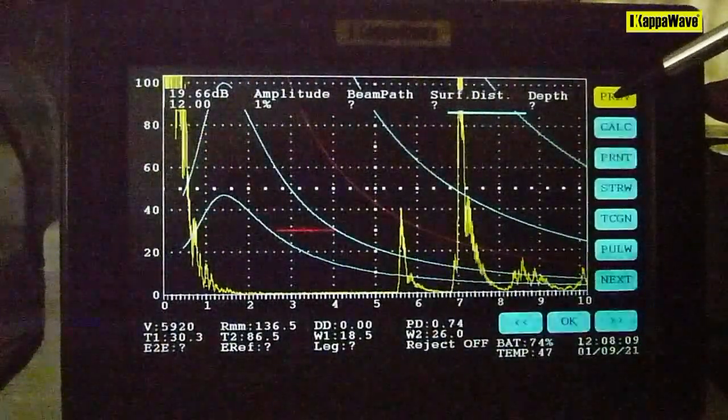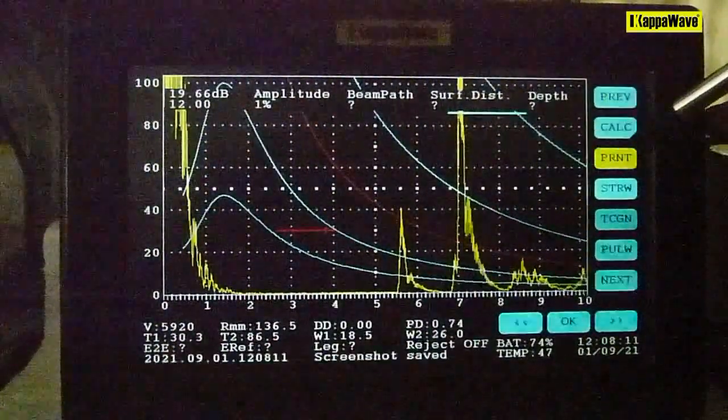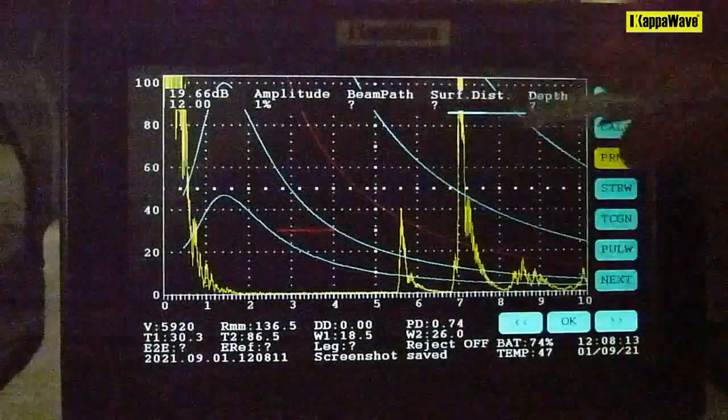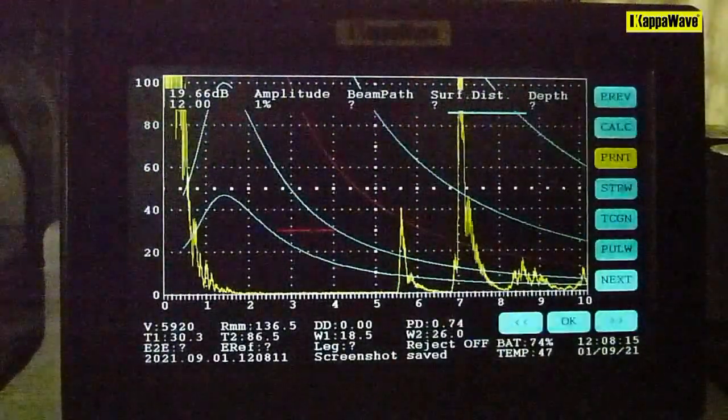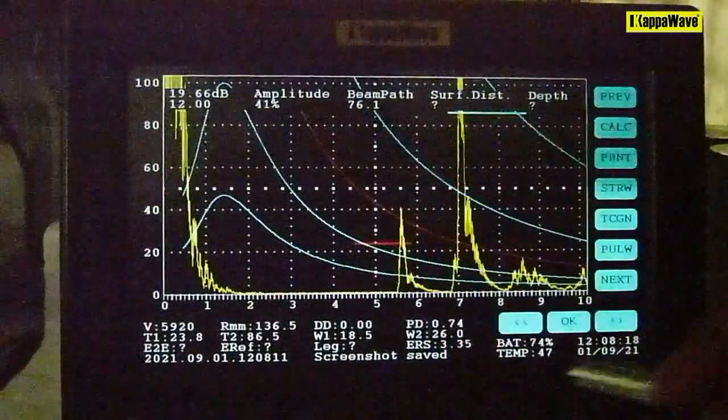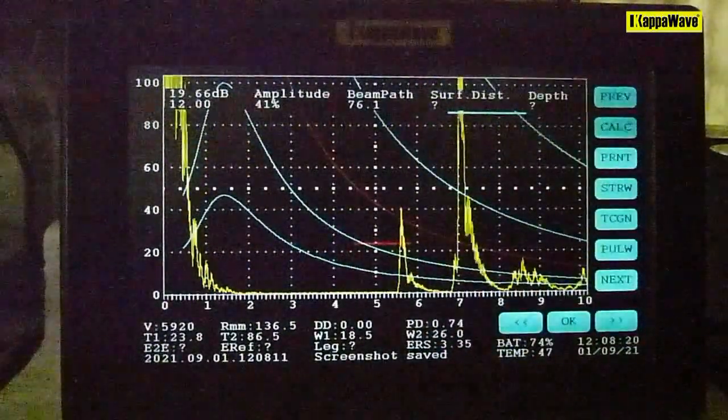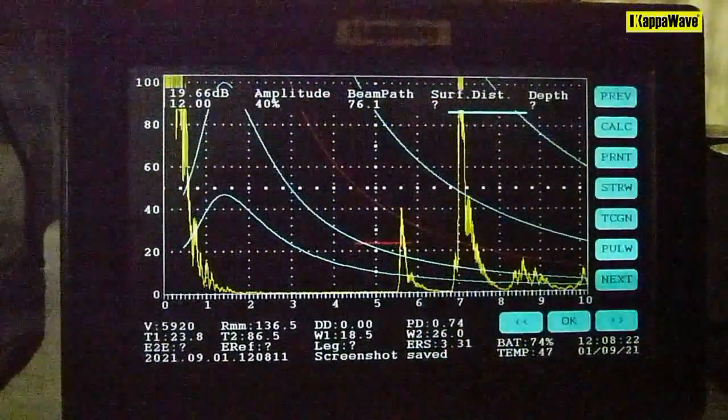You have an option to print as well. For example, if you want to record this information, it's possible. There's a print option here. Click print and the file will be saved along with your DGS curve. And if you have the ERS value, that will also be printed. Thank you.